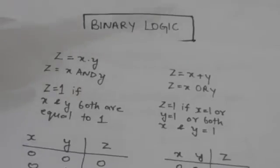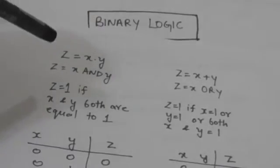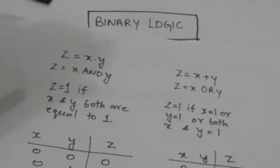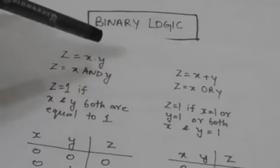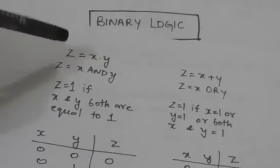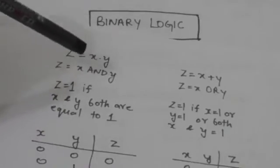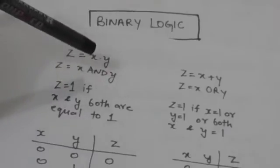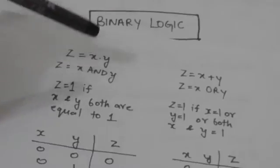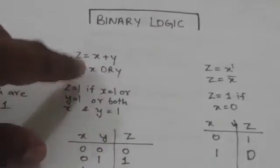The result of these logical operations is either 0 or 1. So here z equals to x dot y. We will read it as z equals to x AND y, because the dot operator represents the AND logical operation. The value of z will be a binary variable, since the result of these logical operations is either 0 or 1.